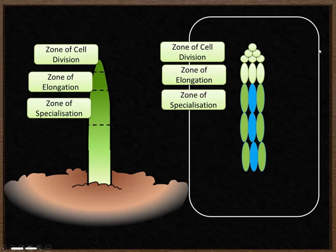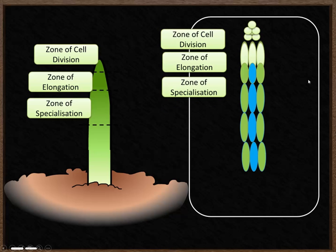So the first step is cells divide — some new cells form. Then elongation occurs; cells that have just finished elongating are about to enter the zone of specialization. Those cells became specialized, these ones have elongated, and the zone of cell division has moved up slightly because the plant has grown. Growth in plants is mainly due to the elongation of cells — the vast majority of growth in height comes from cells elongating, not new cells being created.